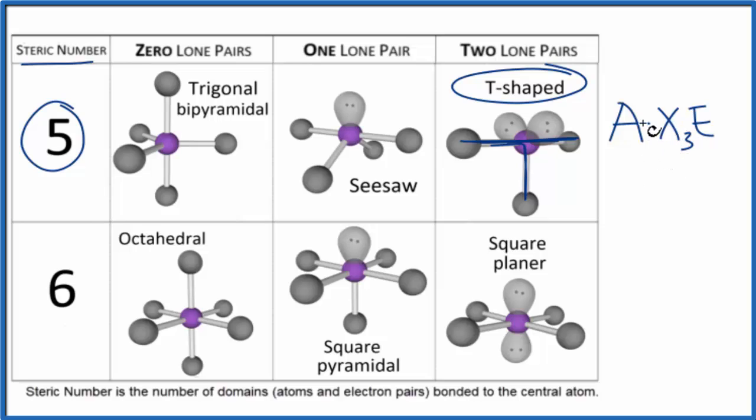and E are the lone pairs. We have two lone pairs. So if you look AX3E2 up on a table, again, you'd find that it's this T-shaped molecular geometry.